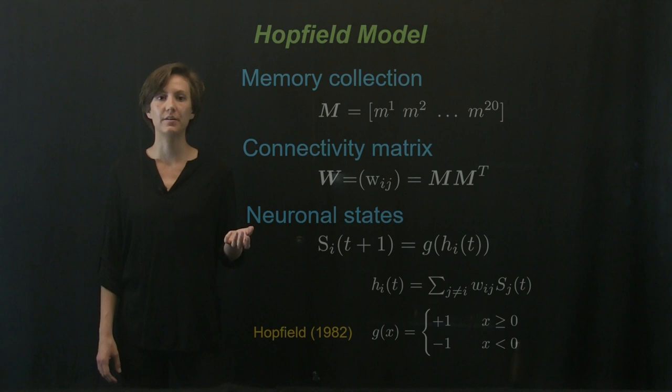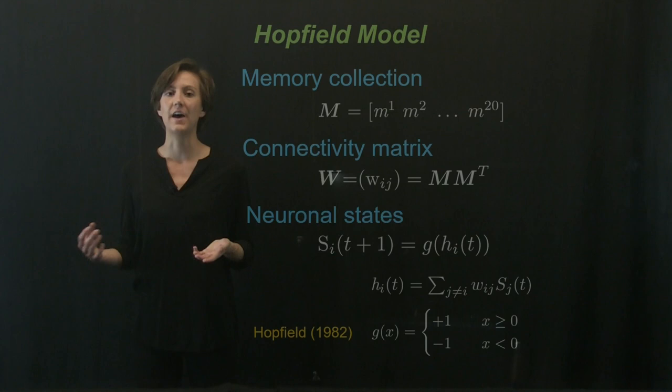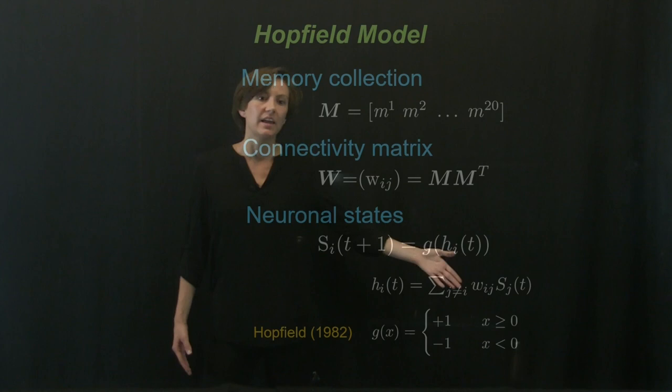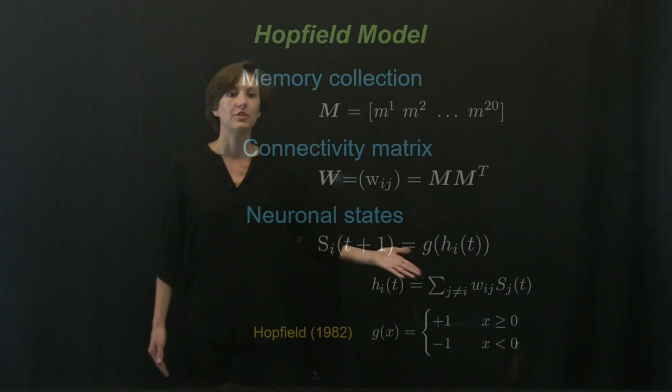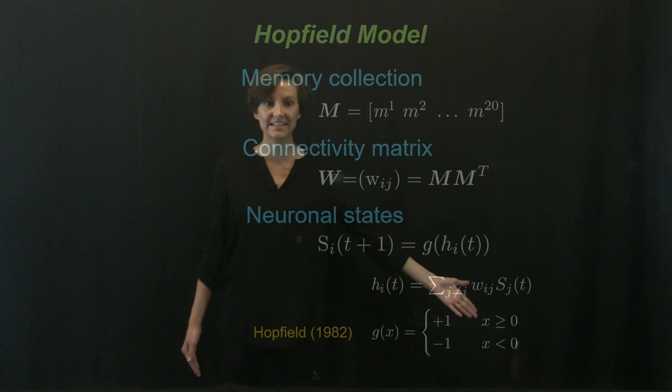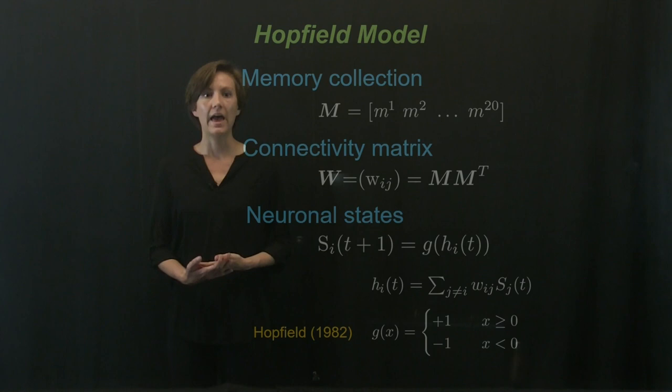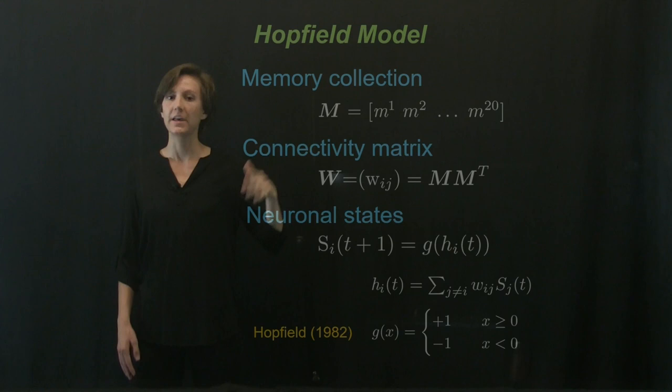The neurons in this model have a binary state: they are either on with a value of positive one or off with a value of negative one. To update the neuron states, we take their current states and multiply them by the connectivity matrix, and this gives us our input stimulus for the next time step. At the next time step, if for an individual neuron the input stimulus is greater than or equal to zero, the neuron turns on with a value of positive one. If the input stimulus is less than zero, the neuron turns off with a value of negative one. Now all the neuron states have been updated and we can go through this process again. A healthy network should converge to one of the stored memory patterns after several iterations.